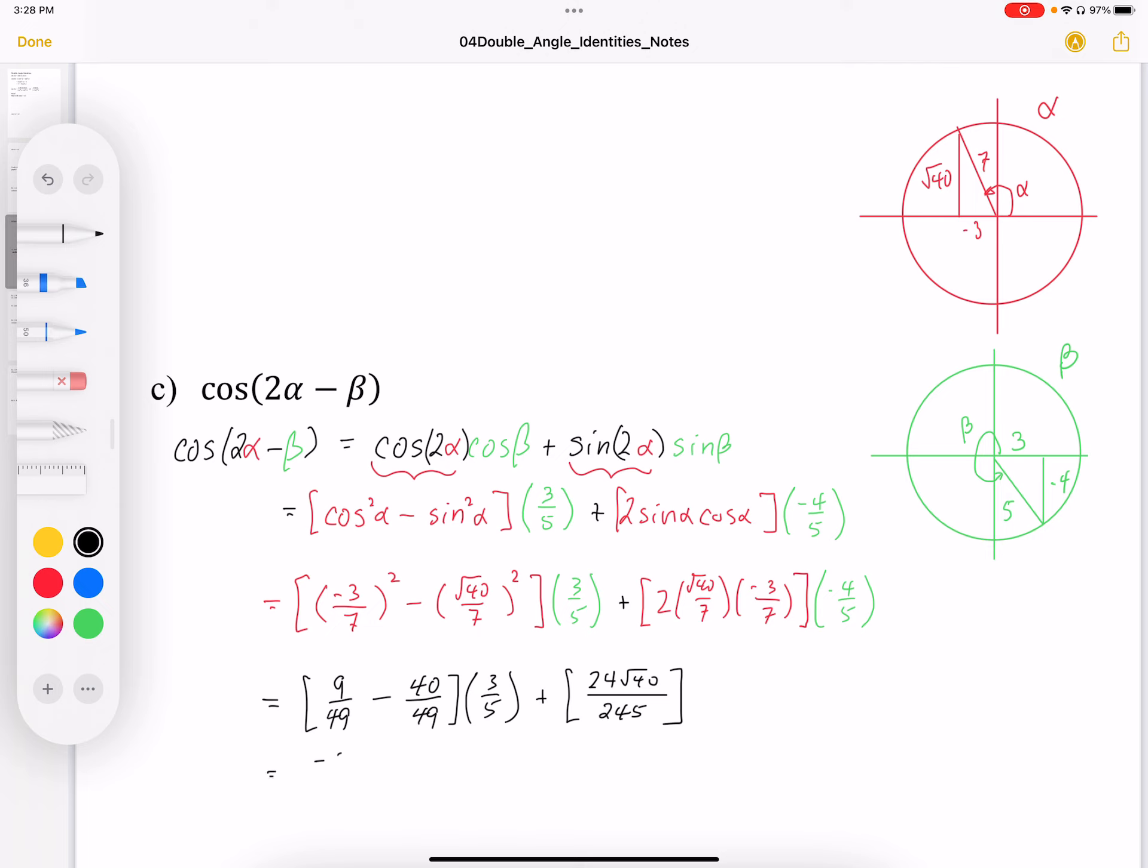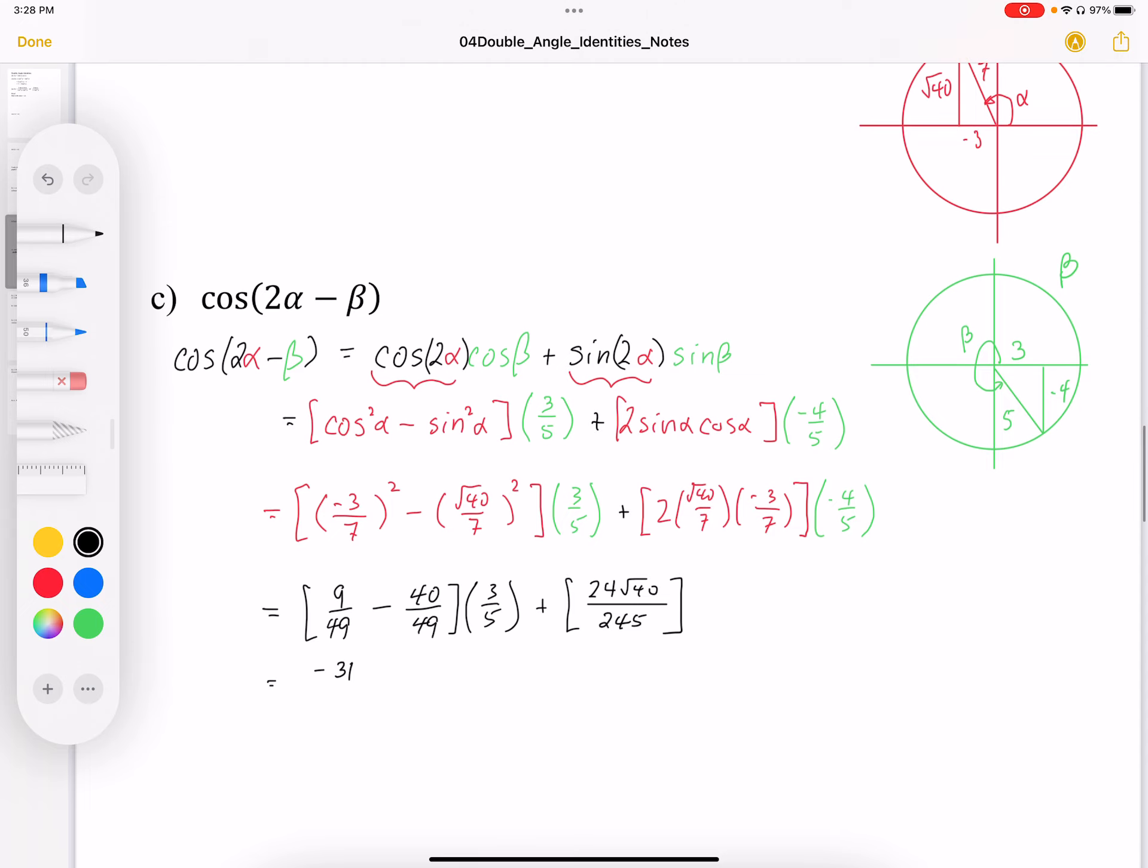I get negative 31 over 49 times 3 over 5 plus 24 root 40 over 245.